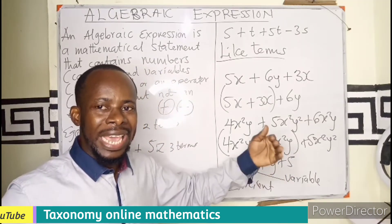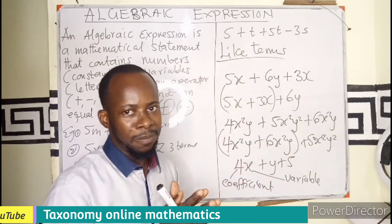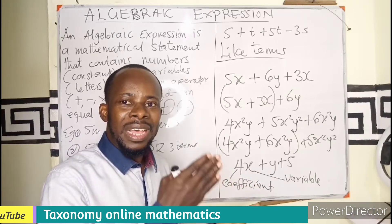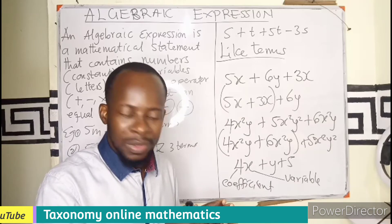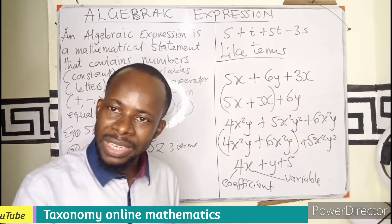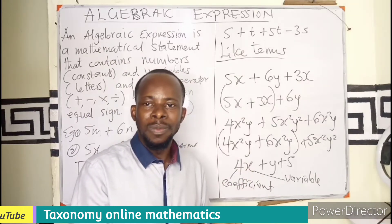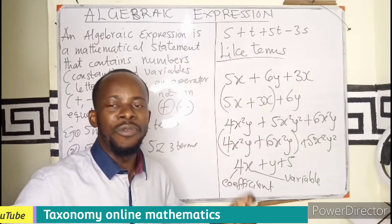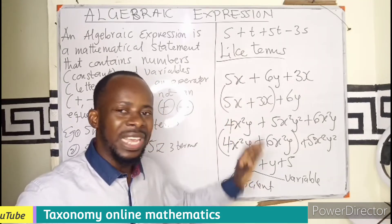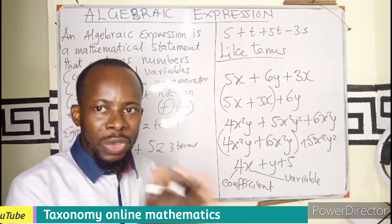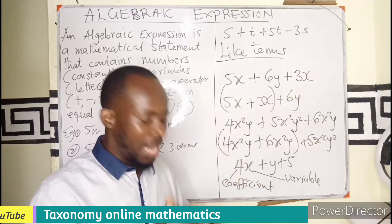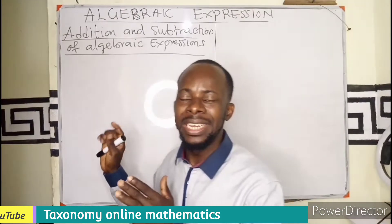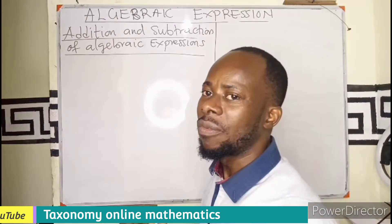These terms — constant, variable, coefficient — we will be using in the simplification of algebraic expressions. Now let's see how we can use this with the operators: addition, subtraction, and multiplication.